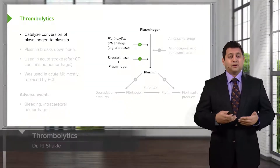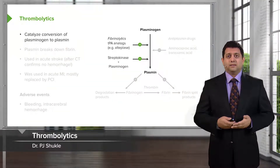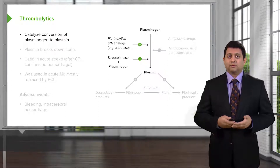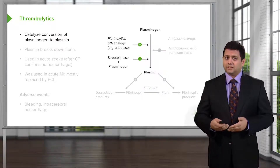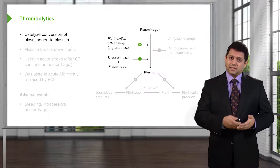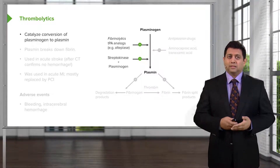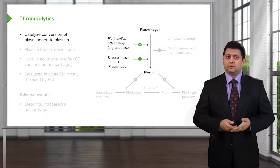Thrombolytics are a different drug category that we use in coagulation cascades. Thrombolytics are different from anticoagulants in that they are active against clots that have already formed. So thrombolytics are a completely different class of drugs.